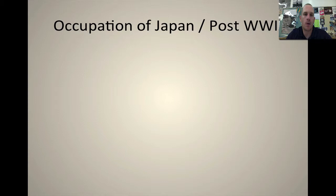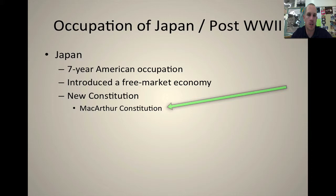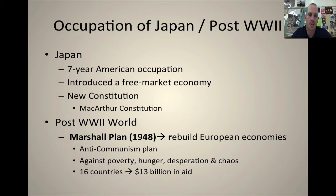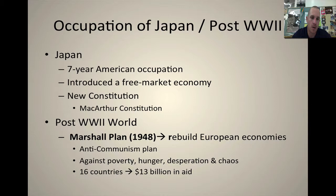We don't leave Japan immediately after. We have a seven-year occupation introducing a free market system, helping them build their economy, and instituting a new constitution dubbed the MacArthur Constitution — MacArthur living there and overseeing the whole thing. Post-World War II, the Marshall Plan from 1948 is designed to rebuild European economies, essentially setting forth an anti-communist plan against poverty, hunger, desperation, and chaos. Sixteen countries took over $13 billion in aid, though unfortunately, like most other things, we don't entirely get paid back.